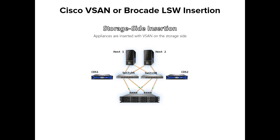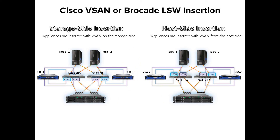This demonstration shows vSAN logical switch insertion one-to-one storage side, where appliances are inserted with vSAN on the storage side. The first nexus of the first appliance is connected to the switch, and data continues to flow through the original paths. A vSAN is configured on the switch for the downstream nexus port and a storage target port, and client server IO traffic resumes through the appliance nexus via the vSAN. An additional vSAN is added for additional nexus and target ports. A second CDS appliance is inserted into the SAN in the same manner, so that all data paths have now been intercepted. Host side insertion is accomplished in a similar manner, where the appliances are inserted with the vSAN on the host side.